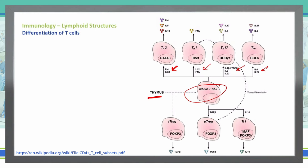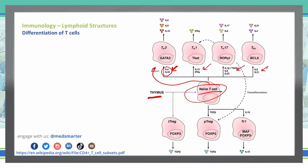With the help of IL-4 and IL-33, our naive T cells will transform into T-helper 2 cells. That T-helper 2 cell can then give off IL-10, IL-5, and IL-4.